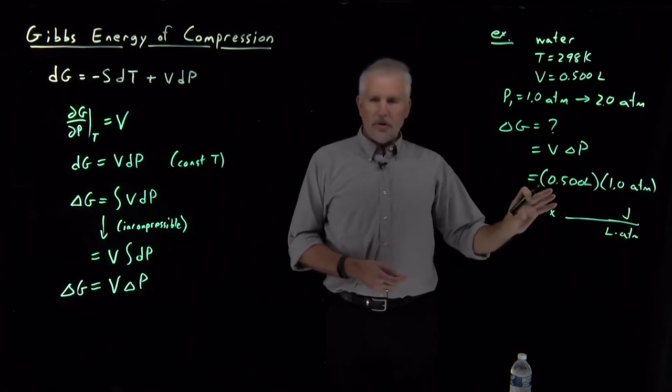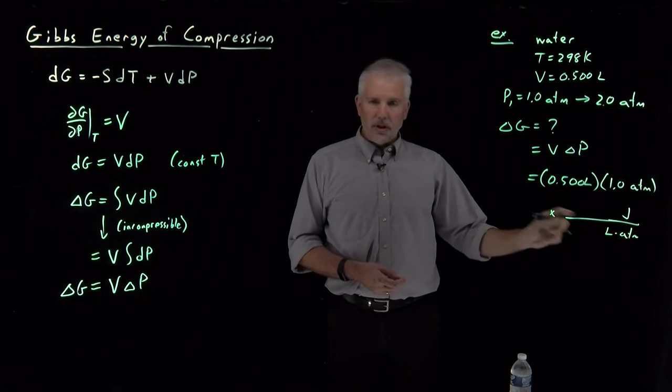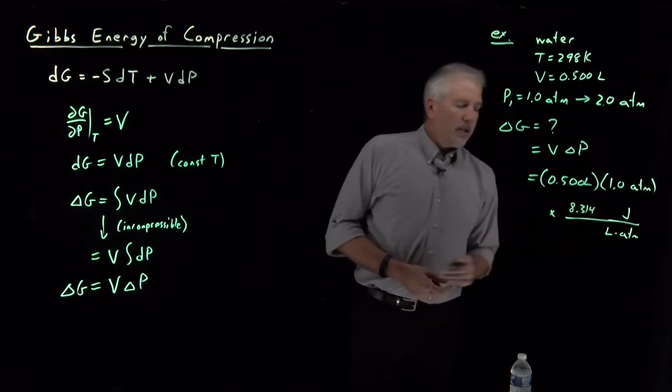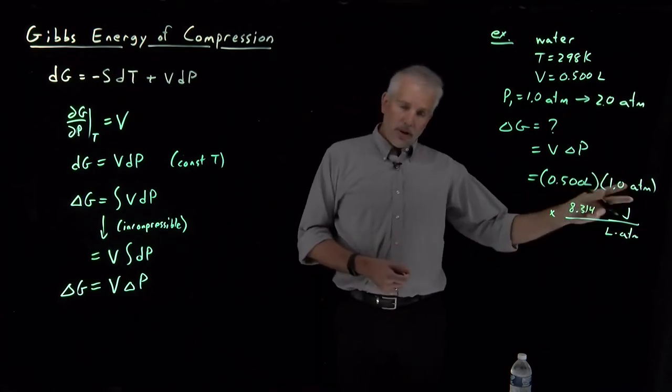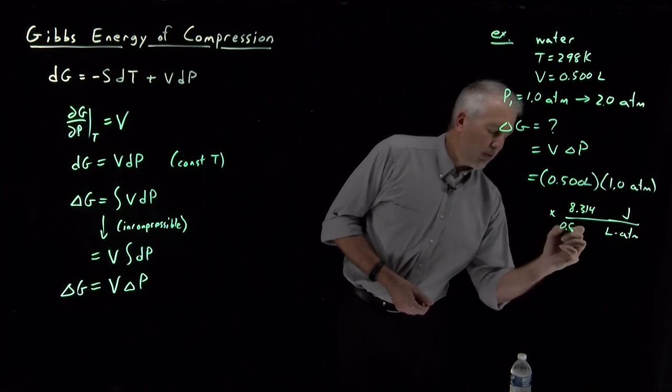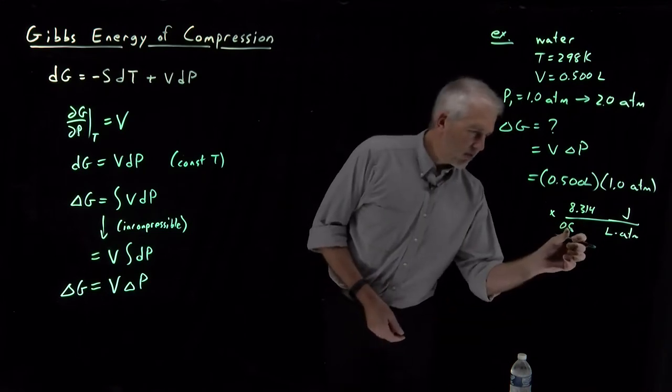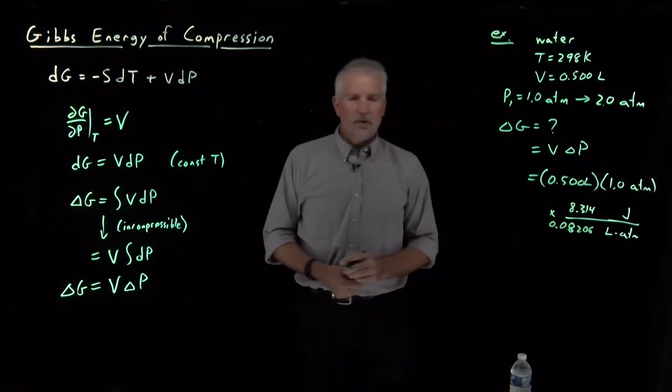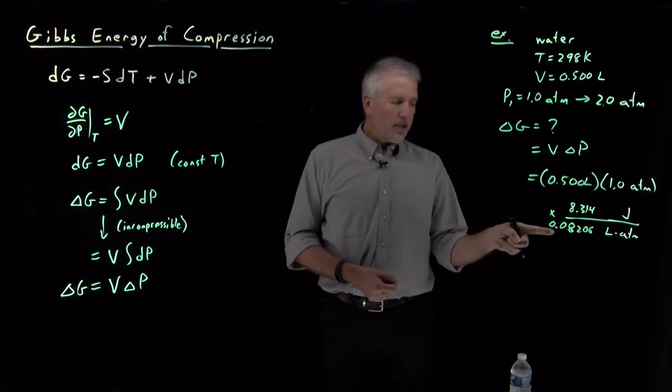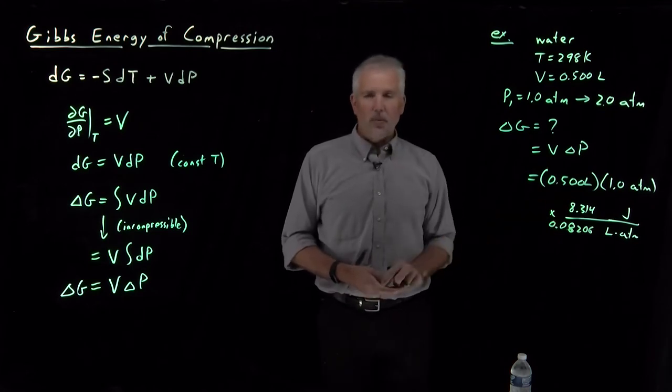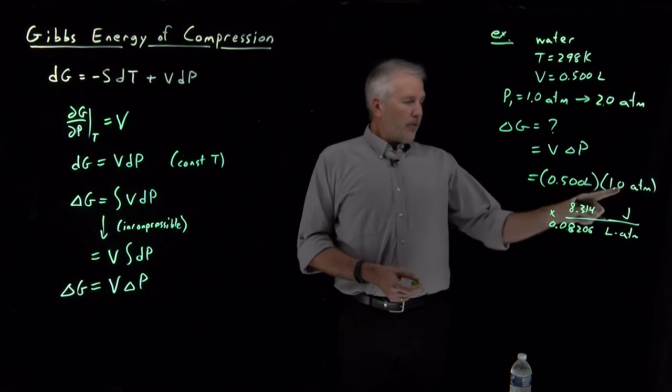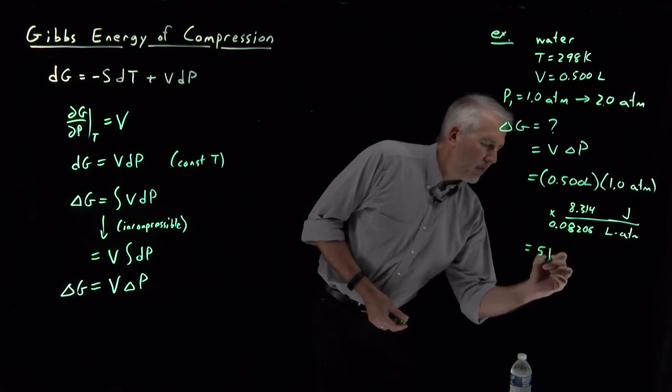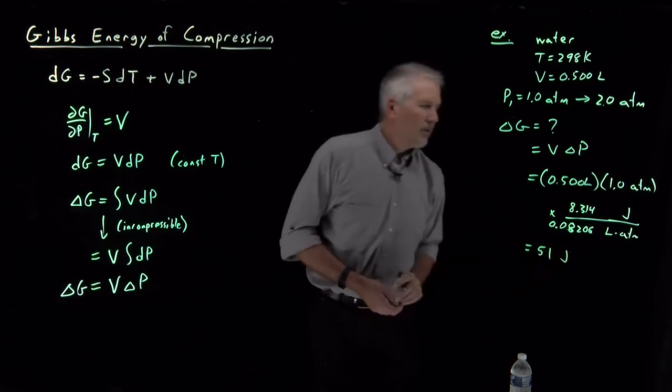We could look up a conversion factor. There's 101.325 joules in a liter atmosphere. More convenient often is to remember the gas constant 8.314 joules per mole kelvin is the same as the gas constant 0.08206 liter atmospheres per mole kelvin. So this many joules is equal to that many liter atmospheres. That ratio is 101.325. So 0.5 liter atmospheres times 101. That works out to a couple of sig figs to be 51 joules.